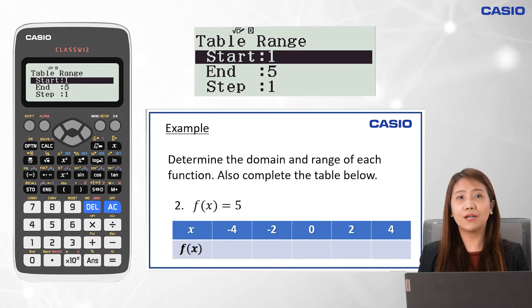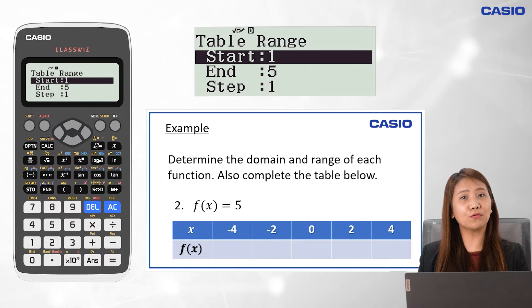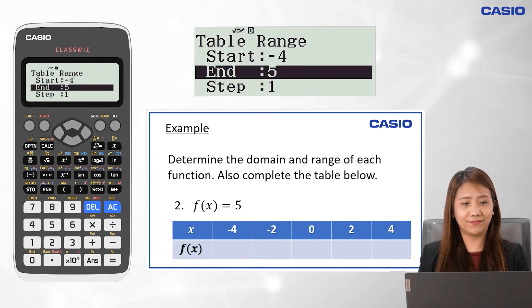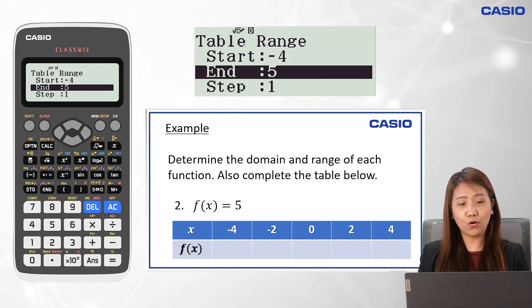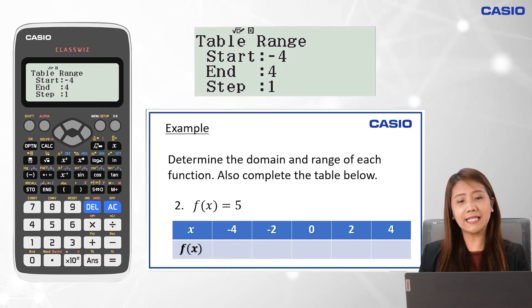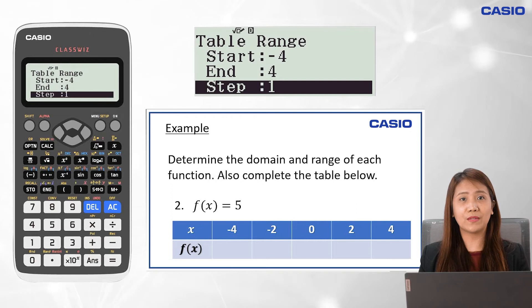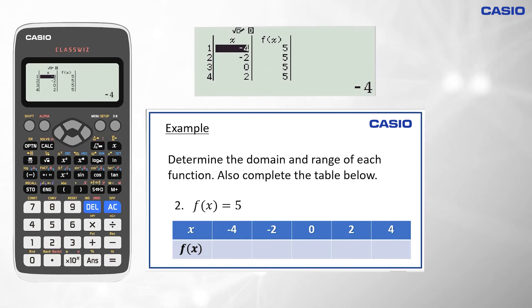For the table range, we follow the values from the given table. For start, input the first value in the table, which is negative 4, then press equal sign. For the end, input the last value in the table, which is 4, and press equal sign. Since the interval between the values of x is 2 units, then the step is 2. Input 2, then press equal sign twice, and the table will appear. The domain is all real numbers, and the range is 5.